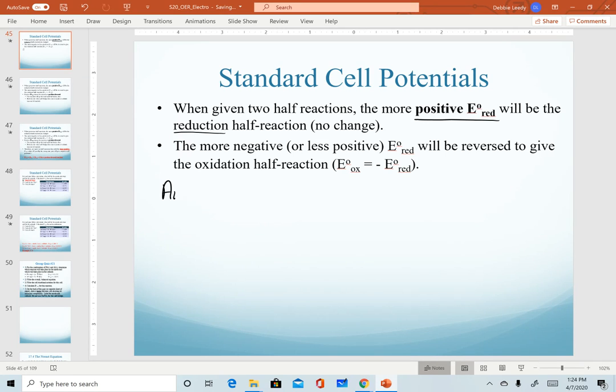For example, if we look at our two half reactions we used in the last video, we had gold being reduced to the solid—gold ion being reduced to solid—with a reduction potential of 1.498 volts.